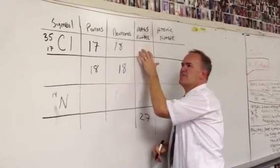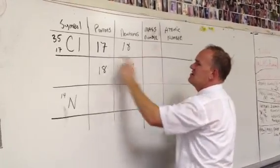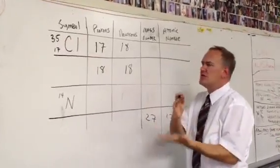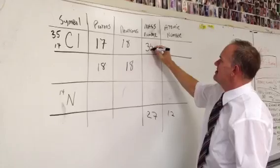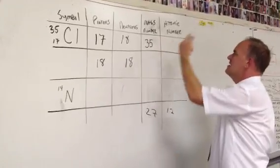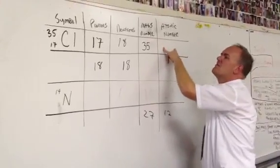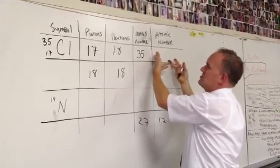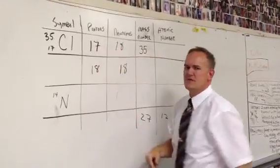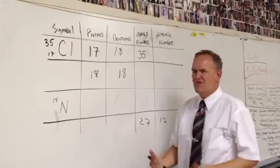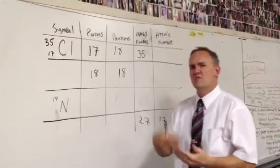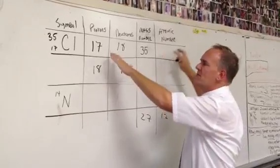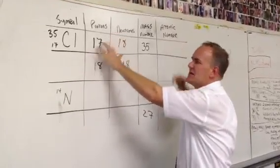Then we get to the mass number — that's easy. That top number is always the mass number; it's the protons and neutrons added together. So we don't have to do anything; it's right there for us. Finally, we get to the atomic number, and you might think that's a stupid question — it's the same as the protons. The protons and the atomic number should always be the same. That's the definition of atomic number: how many protons you have.